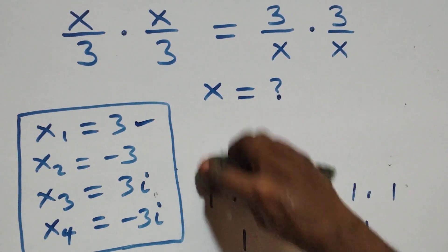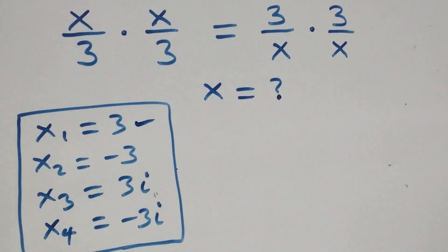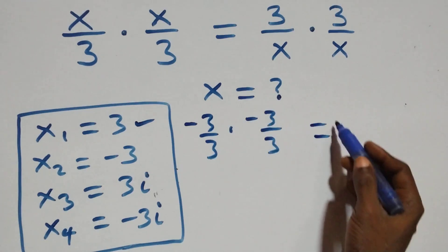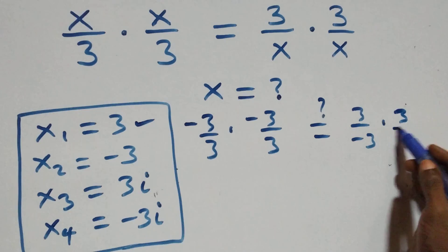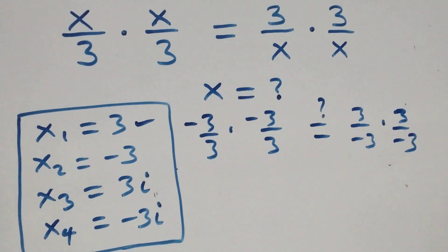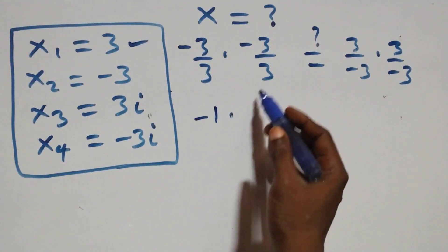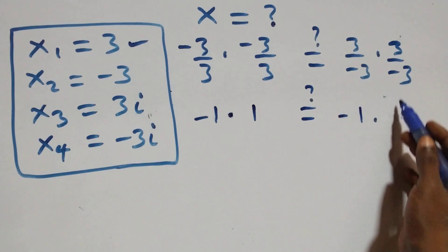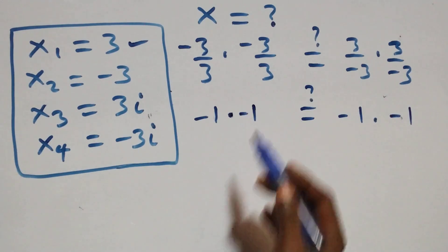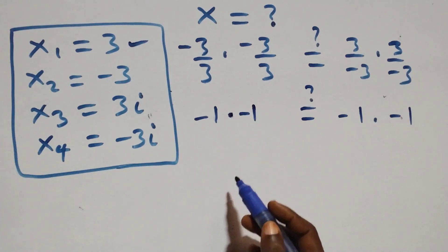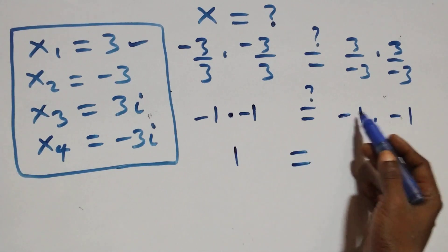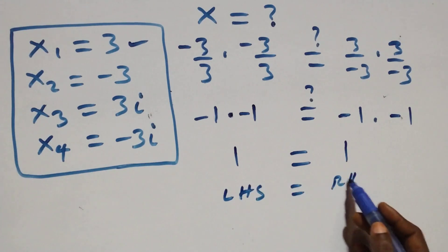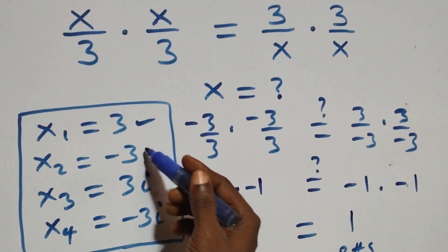Also, substituting the second value x = −3, this equation becomes (−3)/3 times (−3)/3, which is −1 times −1. On the right side, we also have (3)/(−3) times (3)/(−3), which is −1 times −1. Minus times minus is plus, so 1 equals 1. Left-hand side equals the right-hand side, so x = −3 also satisfies this given problem.